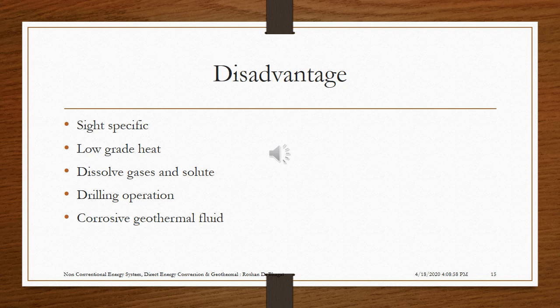The disadvantages of a geothermal power plant include: these plants are site specific; they produce low grade heat; dissolved gases and solutes come out from the earth's surface; drilling operations are required for production and injection wells; and corrosive geothermal fluid may damage the steam turbine.